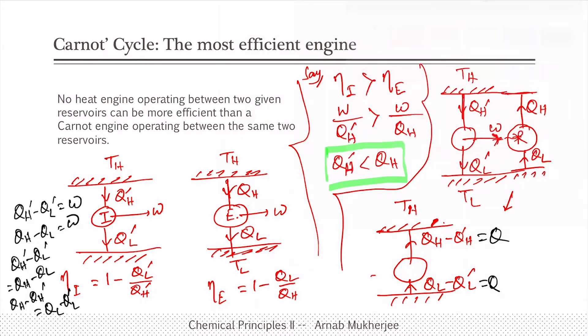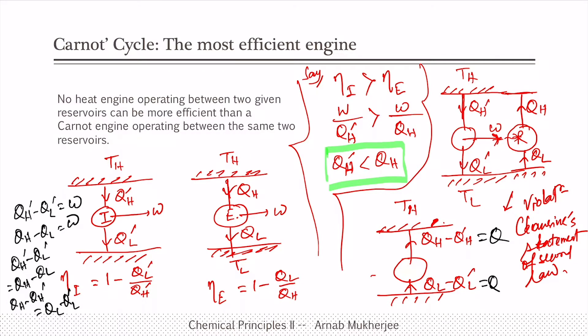This is a violation of Clausius's statement of the second law of thermodynamics. This means our initial argument — that an irreversible engine can be more efficient than a reversible engine — cannot be true, because if it were true it would violate the second law. Therefore, no irreversible engine can have higher efficiency than a reversible Carnot engine.